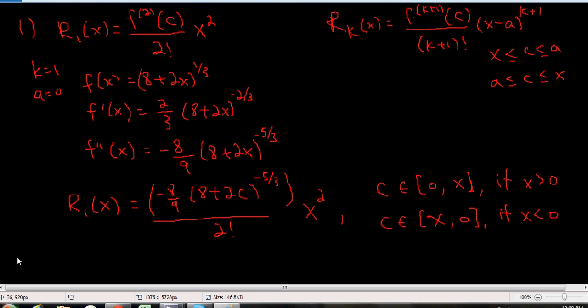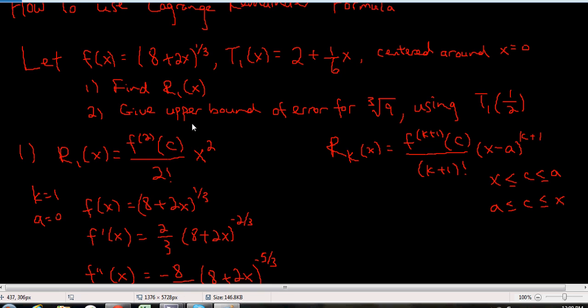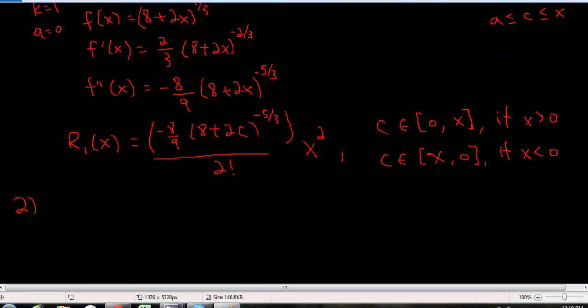So let's do part 2 of this question. So part 2 was give the upper bound of the error for the third root of 9, given that you're using T1 of 1/2 to approximate f here. Just double check. If you plug in f at half, x is half, then I would get 8 plus 2 times 1/2, 2 times 1/2 gives me back 1. So 8 plus 1 is 9, so it's the third root of 9. So in fact, T1 of half would approximate f at 1/2.